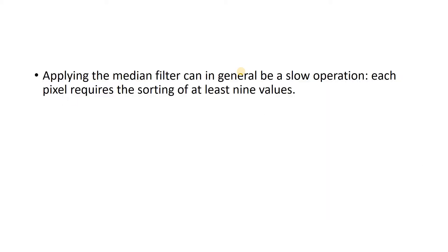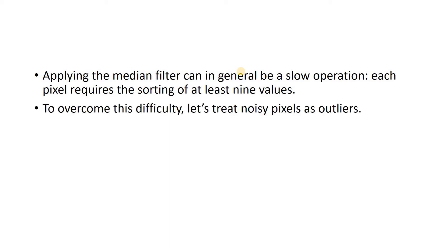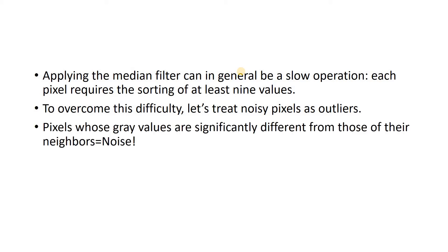That's why we are coming up with another technique to remove salt and pepper noise — because mean filter cannot be used directly and median filter is expensive. To overcome this difficulty, let's treat the noise pixels as outliers, the same way we handle outliers in machine learning and data science. Pixels whose gray values are significantly different from those of their neighbors will be considered as outliers — meaning those are noise. So noise and outliers are the same in this approach.